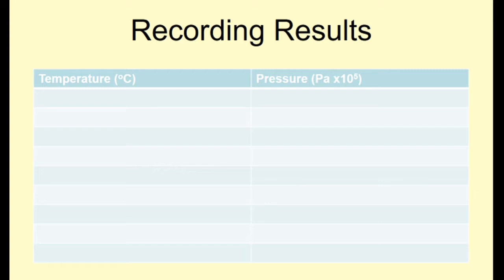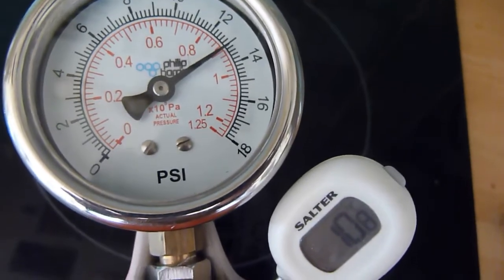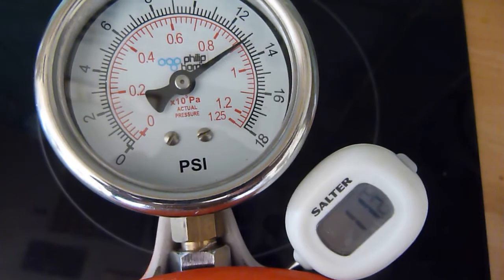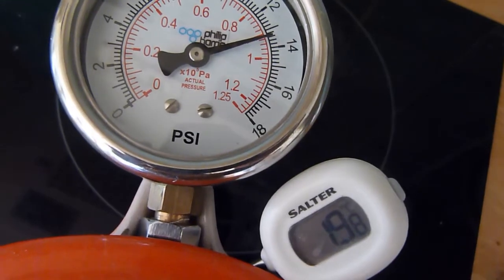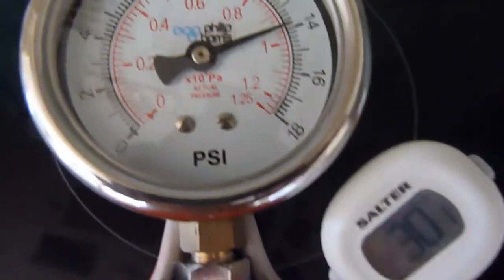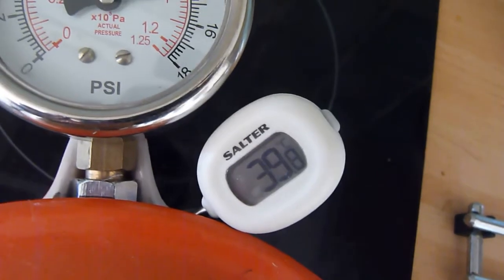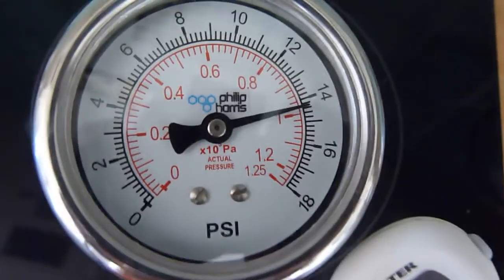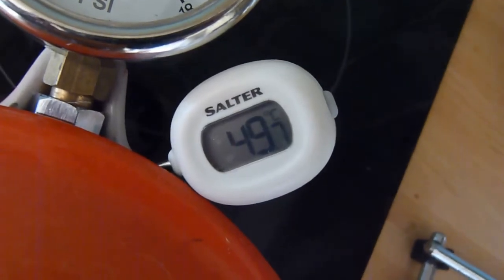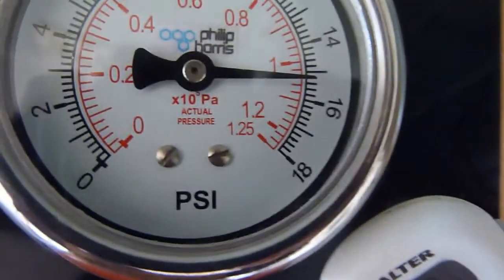You may well need to pause the video at certain times. Try and take a reading every 10 degrees Celsius. This first reading at about 10 degrees Celsius is actually 0.9 times 10 to the 5 pascals. Remember to pause the video whenever you need to. As soon as you've got all of your results, you need to plot a graph of temperature on the x-axis and pressure on the y-axis, and hopefully you'll be able to draw a line of best fit.